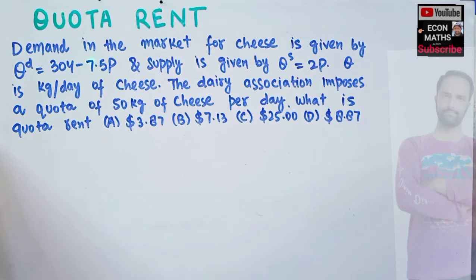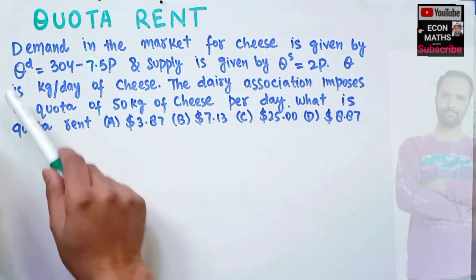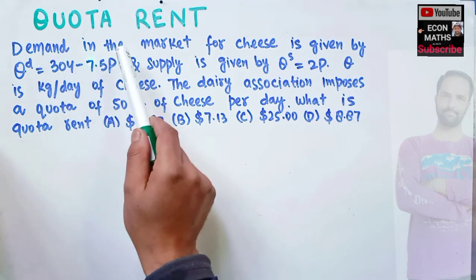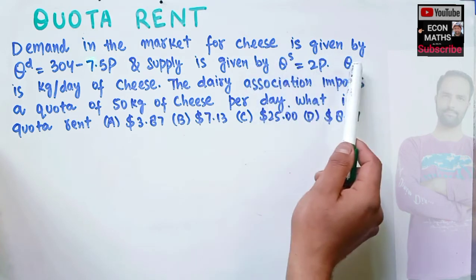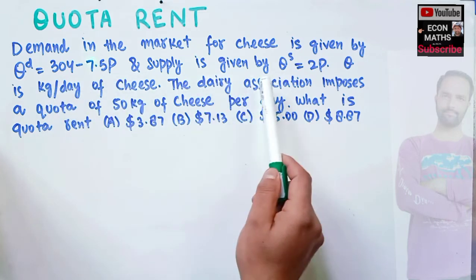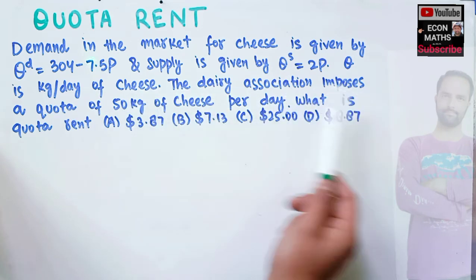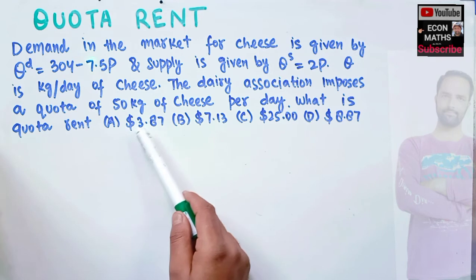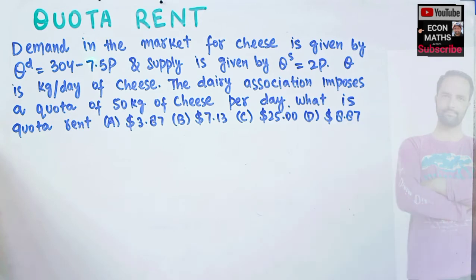In this video we will solve a numerical problem on how to find the quota rent from given demand and supply functions. The demand in the market for cheese is given by Qd = 304 - 7.5p, where p denotes price, and supply is given by Qs = 2p, where q is kilograms per day of cheese. The dairy association imposes a quota of 50 kg of cheese per day. The options are $3.87, $7.13, $25.0, or $8.87.